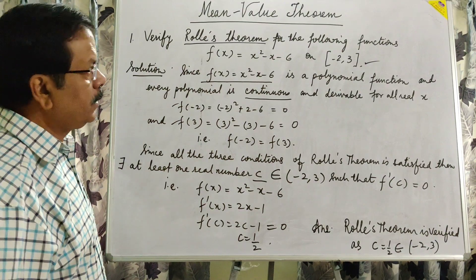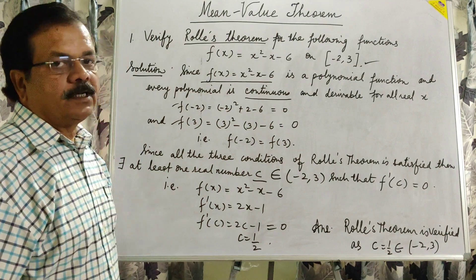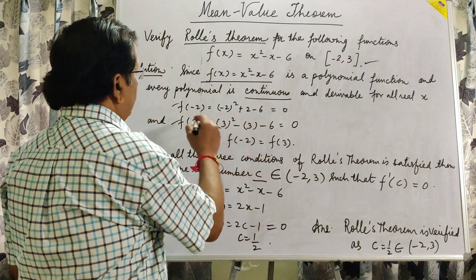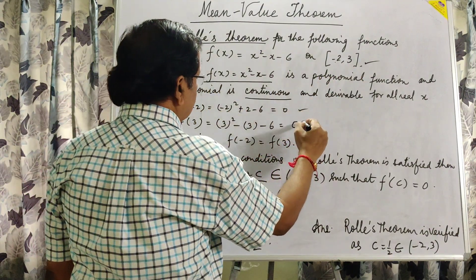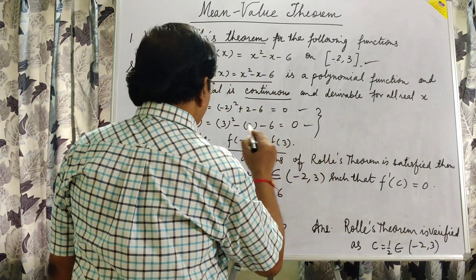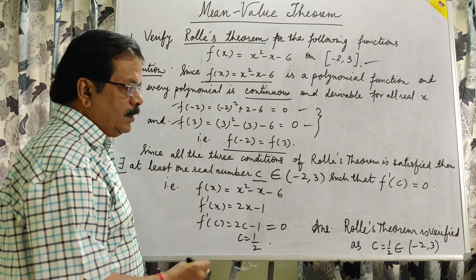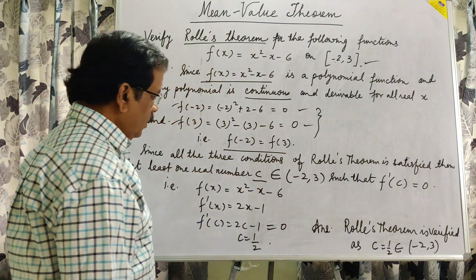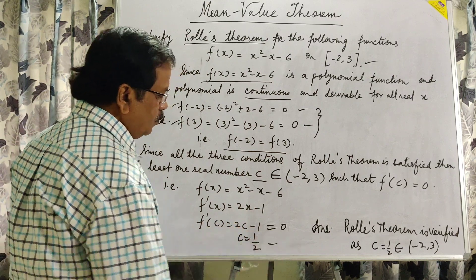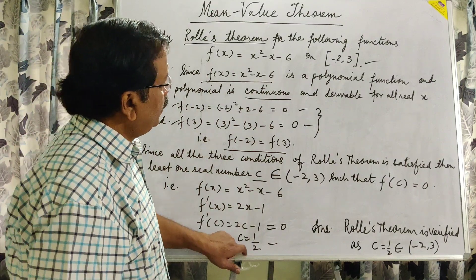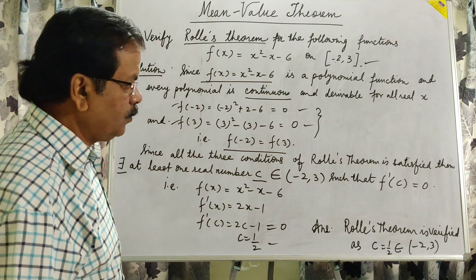You just write the statement that every polynomial is continuous and derivable for all real values of x. Substituting the endpoint values at minus 2 and 3, you get 0 and 0 — both values are equal. According to Rolle's theorem, there exists at least one real number c in the open interval such that f'(c) equals 0. Differentiating f(x) gives 2x minus 1; substituting for c gives c equals 1/2. This value 1/2 lies in the open interval (-2, 3), so Rolle's theorem is verified.